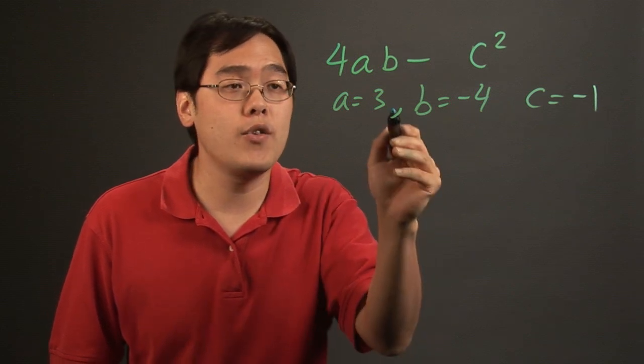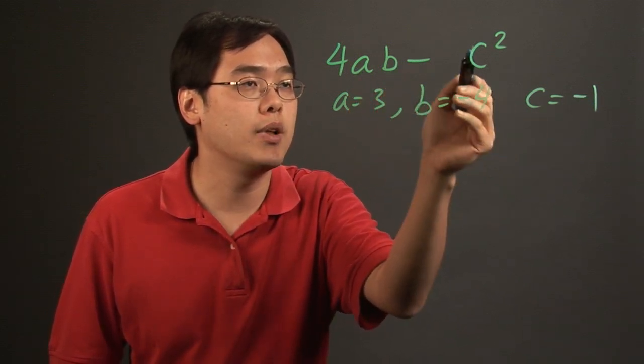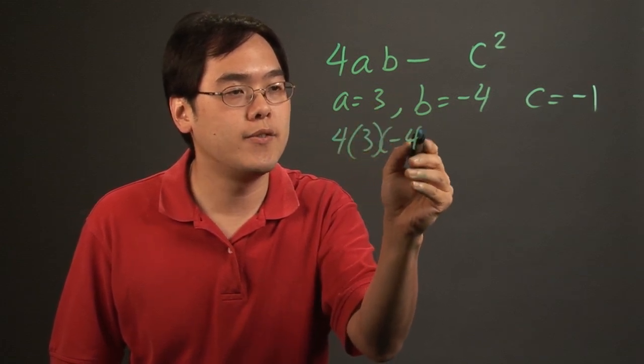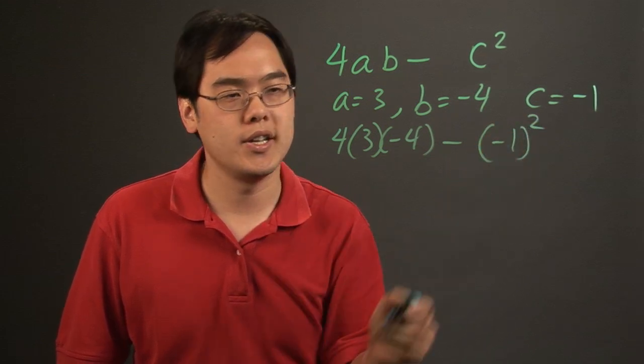What you're doing here is for every a you're going to plug in 3, for every b plug in negative 4, and for every c plug in negative 1. So you have 4 times 3 times negative 4, minus negative 1 quantity squared.